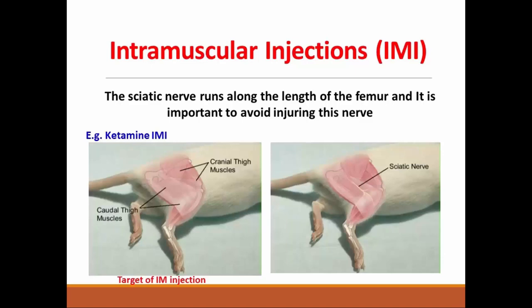Look here — the sciatic nerve runs at the middle of the thigh, classifying the muscles of the thigh into the caudal muscle below and the cranial muscle above. You can inject in both muscles, cranial or caudal, but it is better to inject in the caudal muscle.